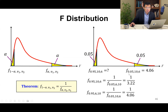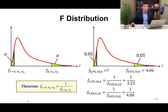For example, F(0.05, 10, 6) — numerator degrees of freedom 10, denominator degrees of freedom 6 — equals 4.06. Then what is F(0.95, 10, 6)? Based on the theorem, F_{1-alpha}(V1, V2) = 1 / F_alpha(V2, V1). Notice that the degrees of freedom switch.